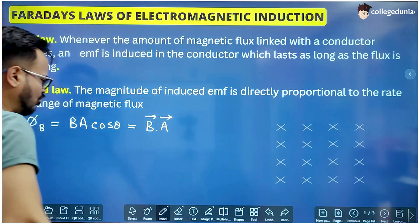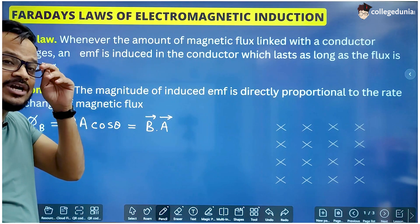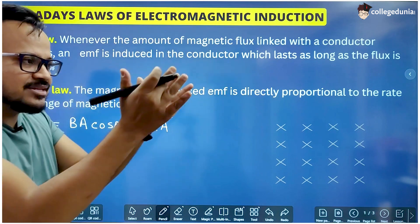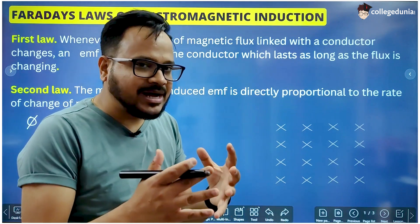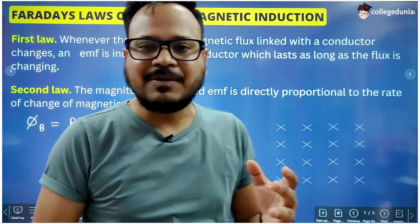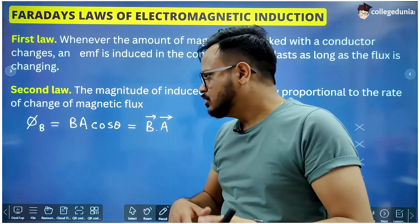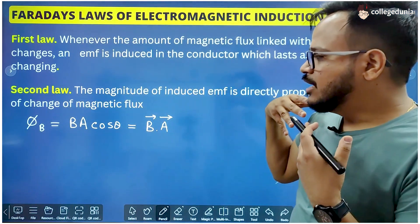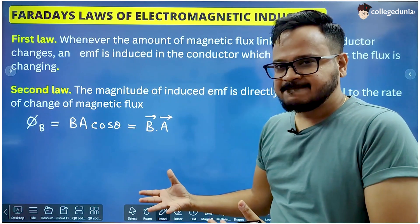Like electric flux, magnetic flux is simply the number of magnetic field lines passing through an area, whose formula is B·A·cosθ.